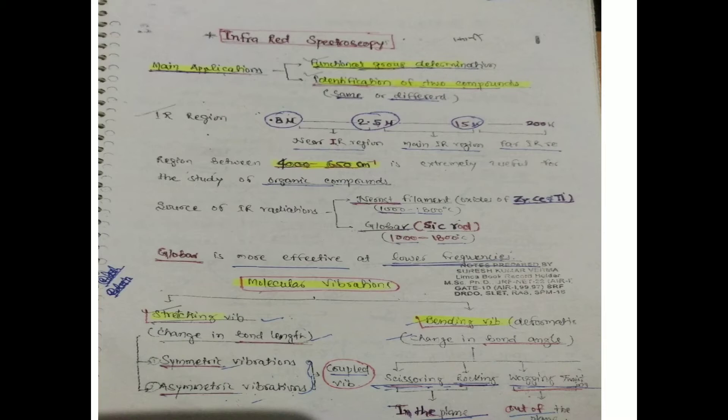The sources of IR radiation: first is the Nernst filament, which consists of oxides of zirconium and titanium, operated at 1000 to 1800 degrees centigrade. The second source is the Globar, which is a silicon carbide rod. The Globar is more effective at lower frequencies.